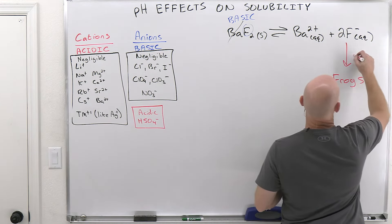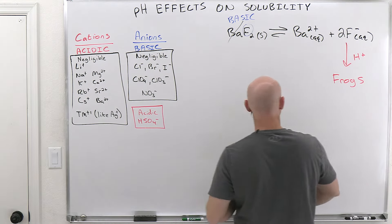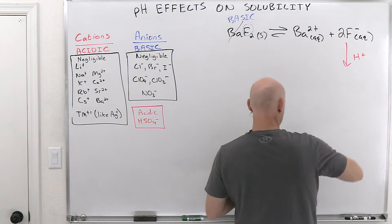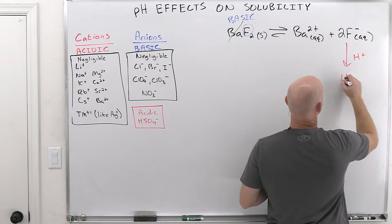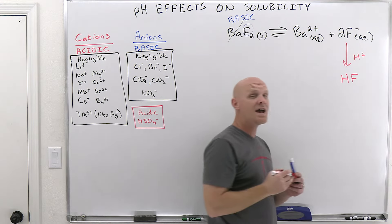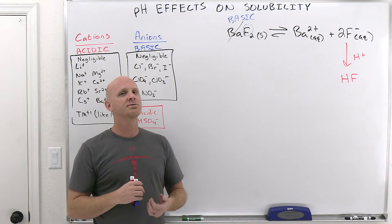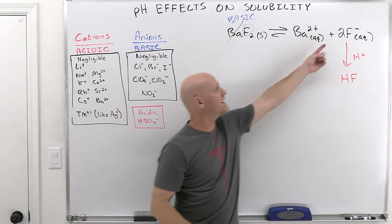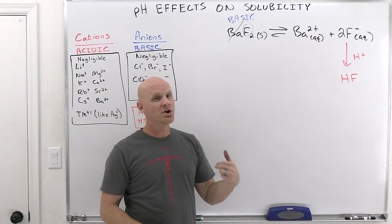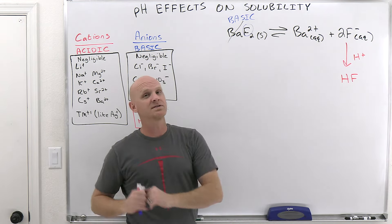And so I'm going to add any acid, any source of H+ is what I'm going to add. And it's not going to turn the fluoride ions into frogs, but it will turn the fluoride ions into HF. And just the same, rather than turning the fluoride into frogs, I'm turning all the fluoride ions into HF. And if they're no longer fluoride ions, but are HF instead,